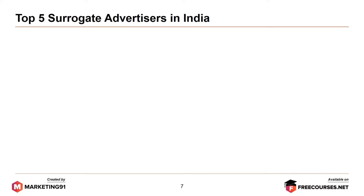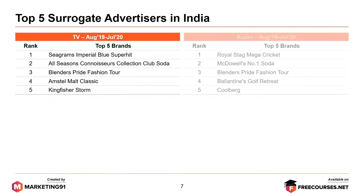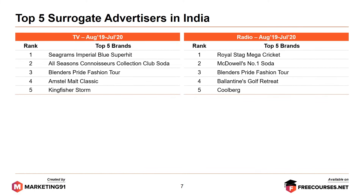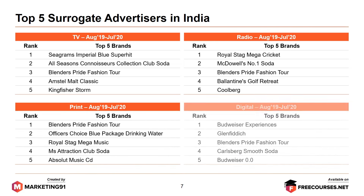Let's look at the top 5 surrogate advertisers in India. In terms of TV, it is the brand Seagrams. In terms of radio, it is Royal Stag Mega Cricket. In terms of print, it was Blender's Pride Fashion Tour. And in terms of digital, it was Budweiser Experiences. These are numbers from August 2019 to July 2020.